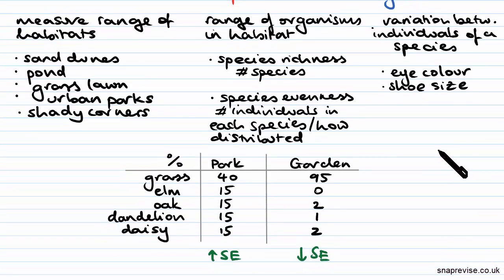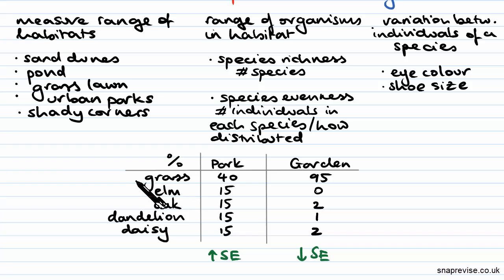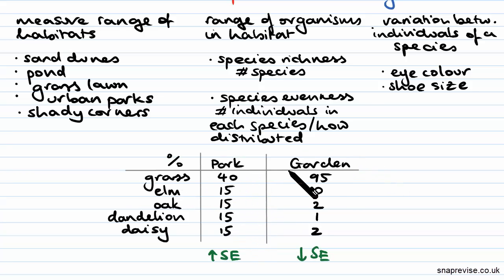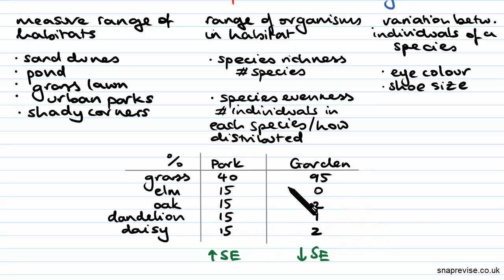For example, if we were to take a park and a garden and calculate the percentage coverage of each of these two habitats in these species, we can see that the park has a relatively even distribution of them all, whereas the garden is mostly grass with very few oak, dandelion and daisy, and there are no elms.